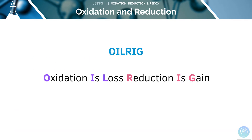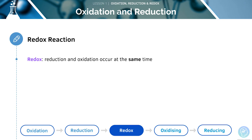Remember the abbreviation OIL RIG to learn how electrons are gained and lost: oxidation is the loss of electrons, whilst reduction is the gain. A redox reaction is when both oxidation and reduction are happening at the same time.